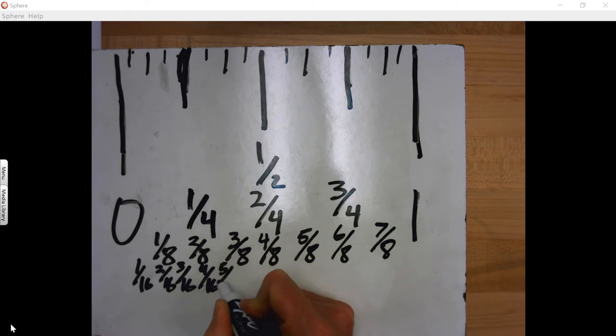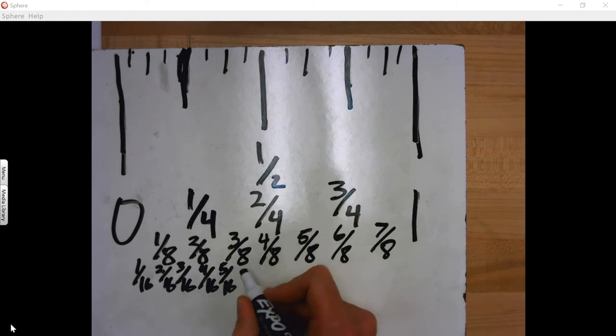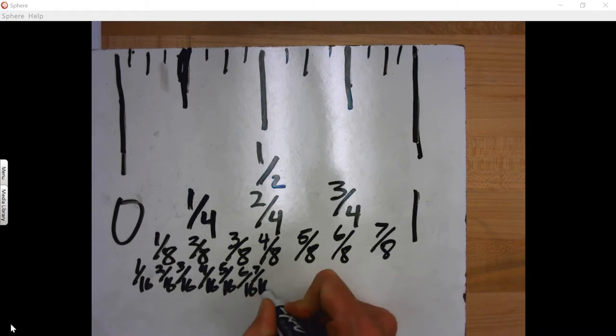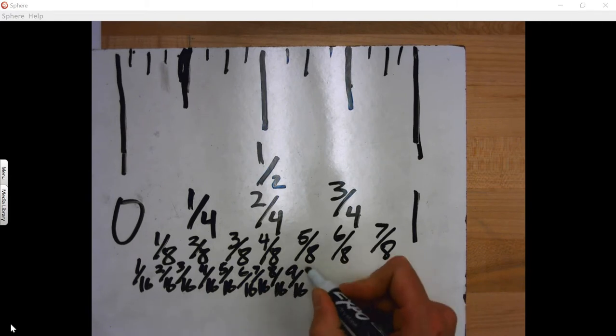And five-sixteenths. And it's going to get really muddied up in here. But three-eighths would be how many-sixteenths? Six-sixteenths. Yeah, whoever said that. Six-sixteenths. And then seven-sixteenths. And then eight-sixteenths. And nine-sixteenths. And ten-sixteenths.